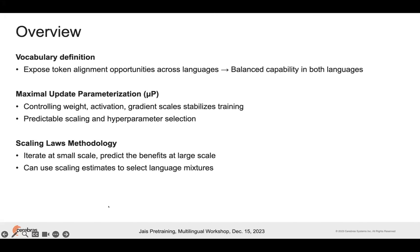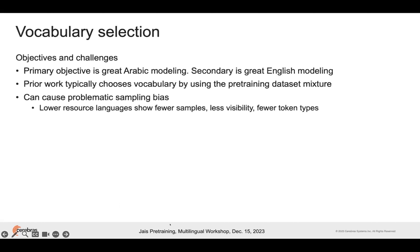Making sure we're finding the optimal hyperparameters when you only get a single shot at training a large model. Then I'll go through our scaling laws methodology. We've used scaling laws for a long while at Cerebras. If you have scaling laws collected, you can iterate at the small scale and predict at the large scale how these things should work, and we use these to do some testing to decide how to mix data in the different languages.